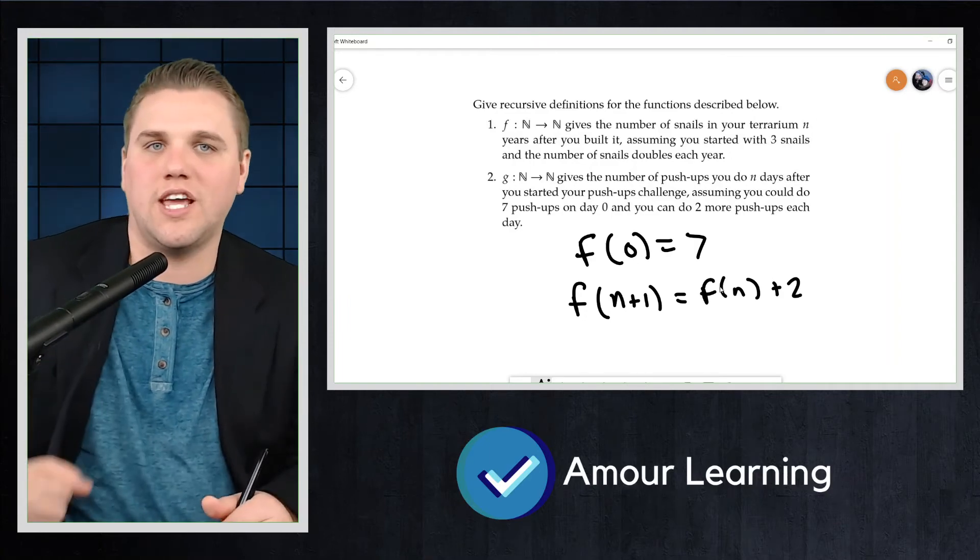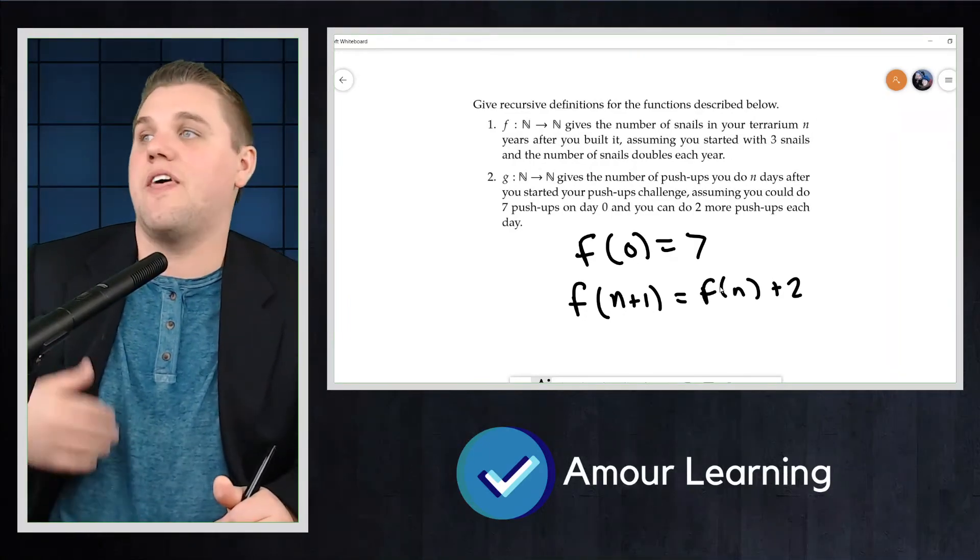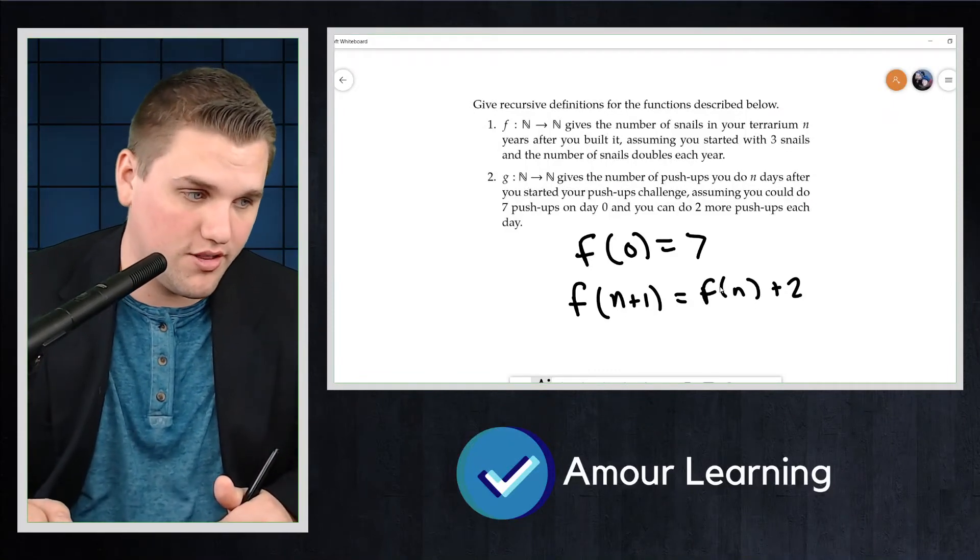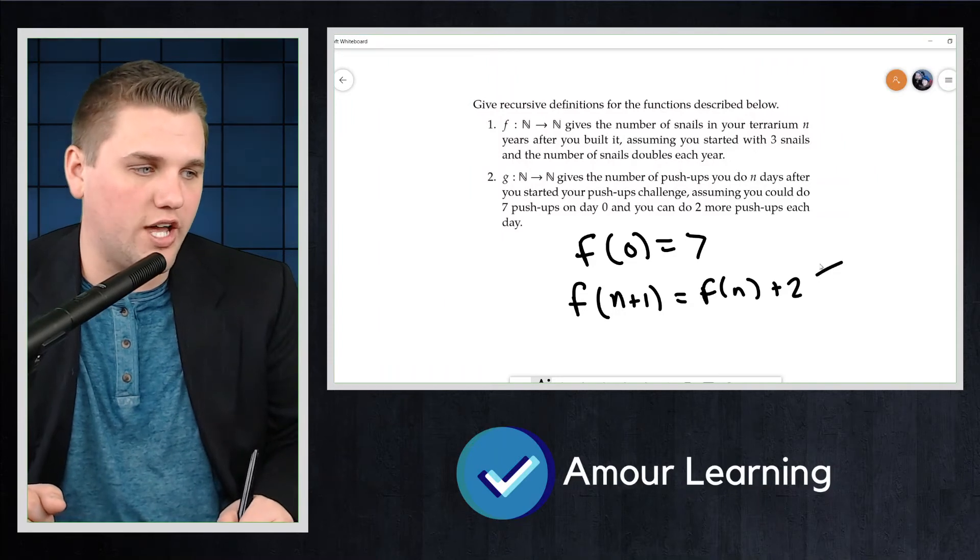So I start from 7 and then I add 2 to get to the next output, which is 9, and then I can do 11 push-ups, and then I can do 13 push-ups, and then I can do 15, and so forth. So this is my recurrence relation.